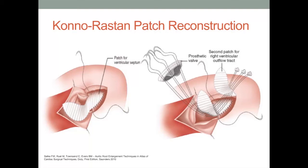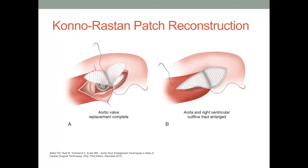Subsequently, a second patch is employed to reconstruct the right ventricular outflow tract. Interrupted sutures with pledgets are employed to attach the base of the triangular RVOT patch to the junction of the diamond-shaped LVOT patch at the level of the aortic annulus. The sutures are then passed through the sewing ring of the prosthetic valve, with the remainder of the valve sutures placed through the annulus in standard fashion, followed by placement into the sewing ring of the prosthesis. The right ventricular outflow tract patch is folded over the free wall of the right ventricle, and a continuous suture is employed to attach the patch to the ventricular epicardial muscle. The left ventricular outflow tract patch is tailored close to the defect and may also incorporate closure of the aortotomy.